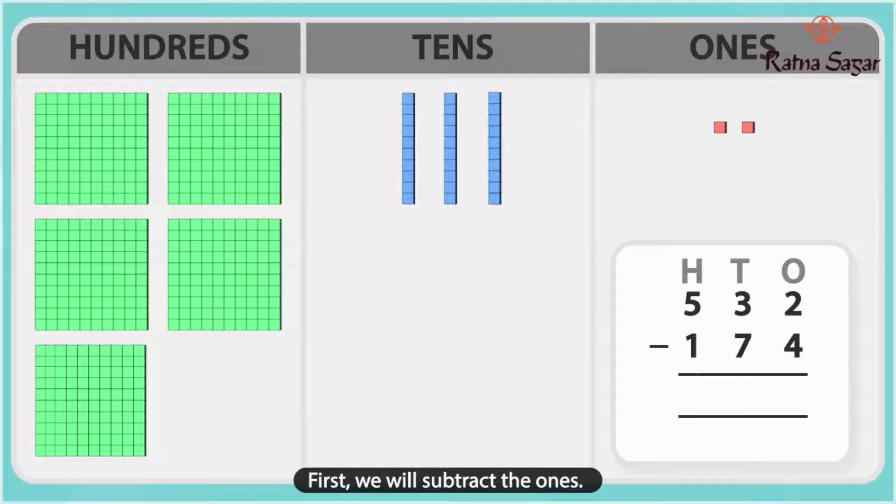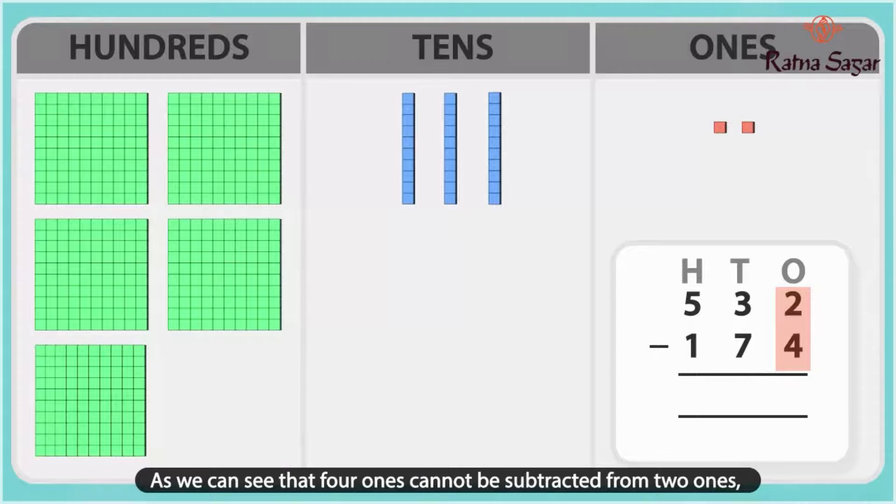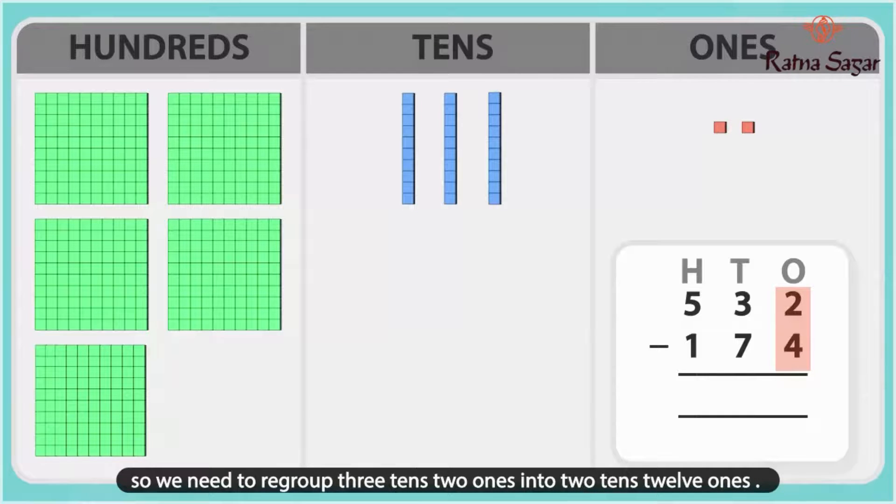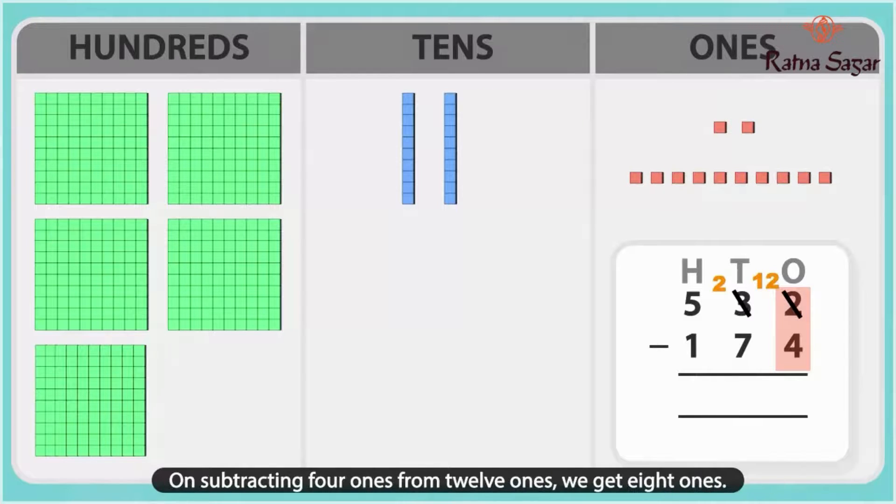First, we will subtract the ones. As we can see, 4 ones cannot be subtracted from 2 ones. So, we need to regroup 3 tens 2 ones into 2 tens 12 ones. On subtracting 4 ones from 12 ones, we get 8 ones.